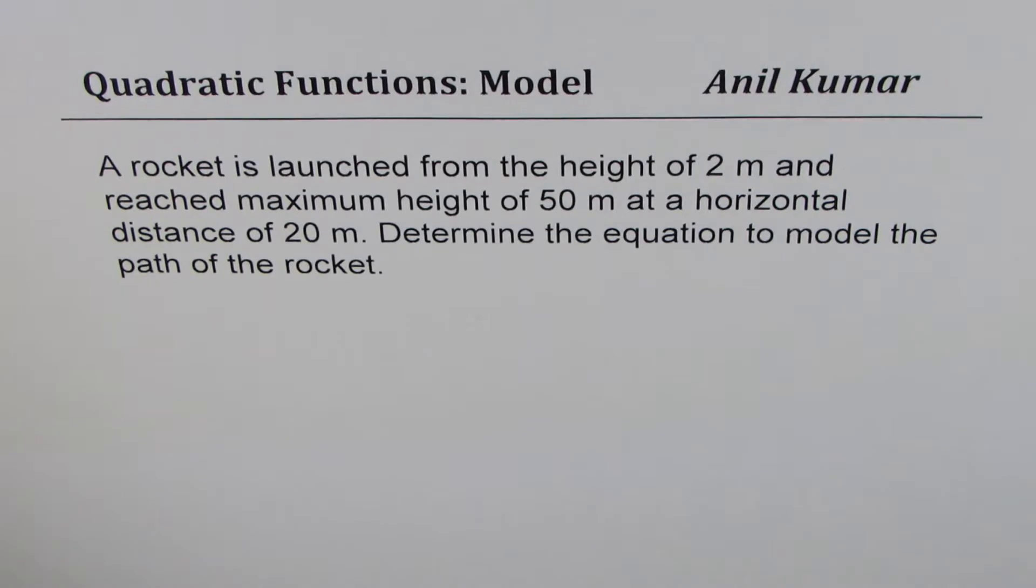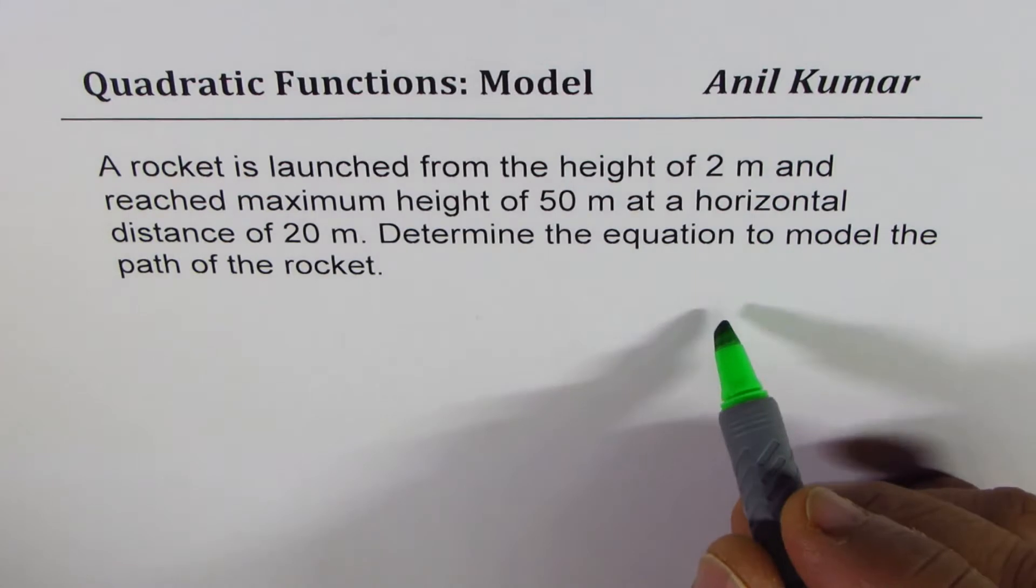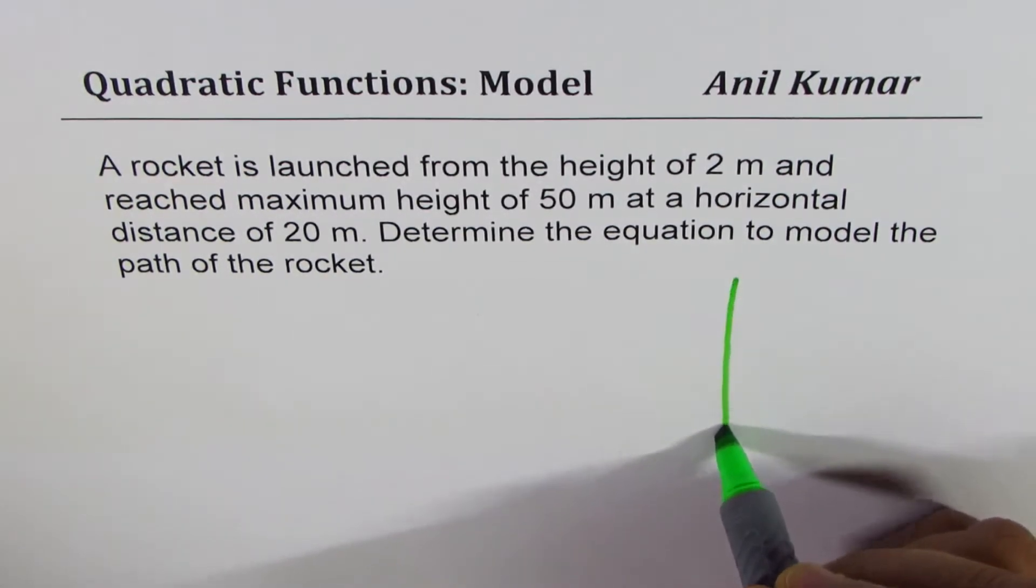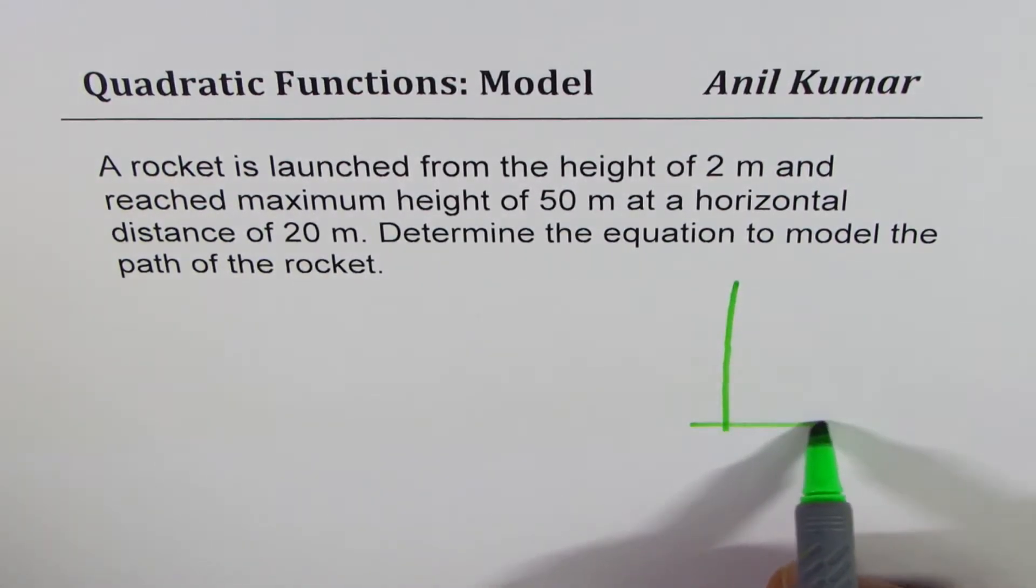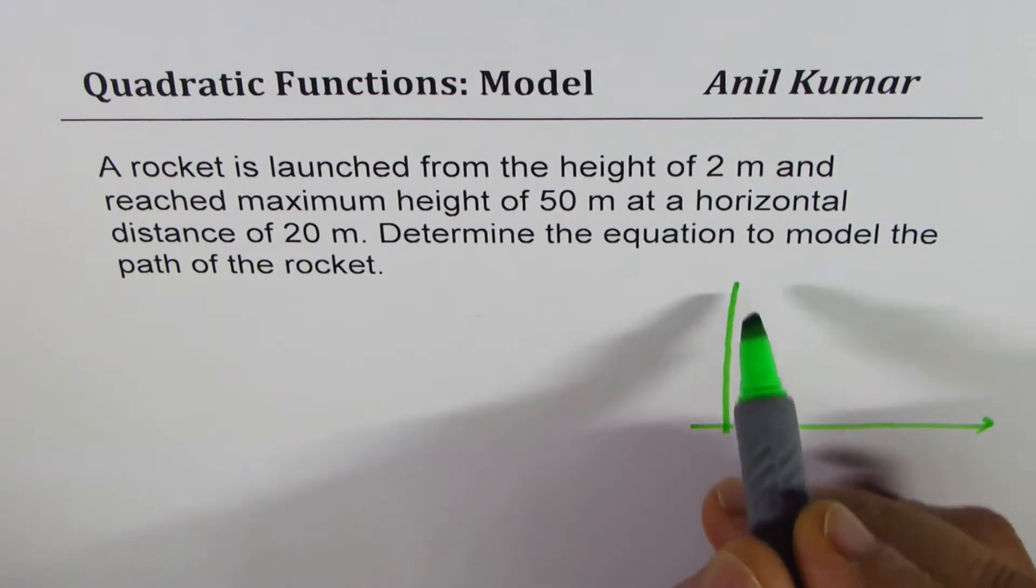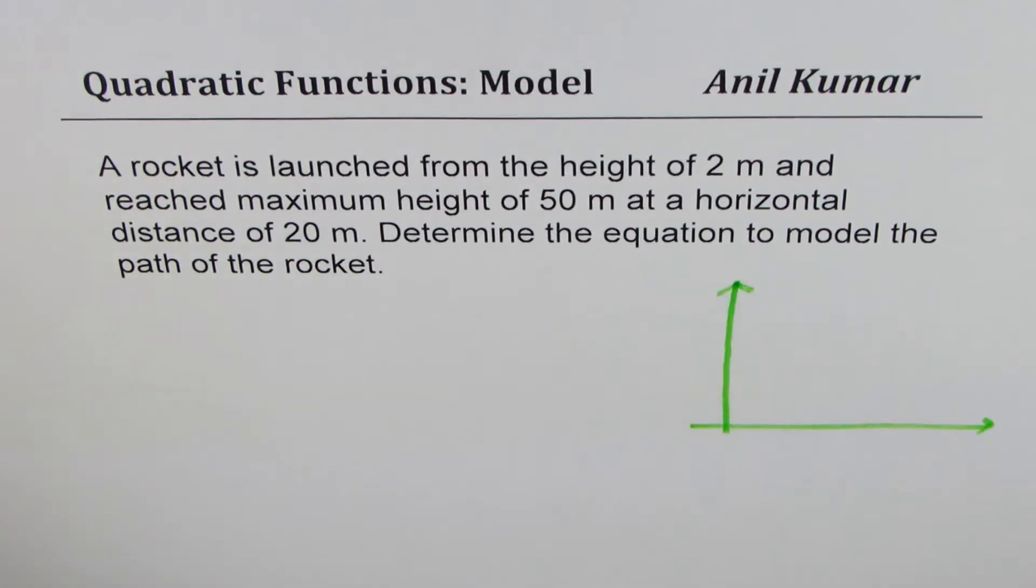Determine the equation to model the path of the rocket. Now at times you will see in the problem itself mentioned that the rocket follows a projectile path which is parabolic. So the path which the rocket follows is a parabola which can be easily modeled with the help of quadratic function.